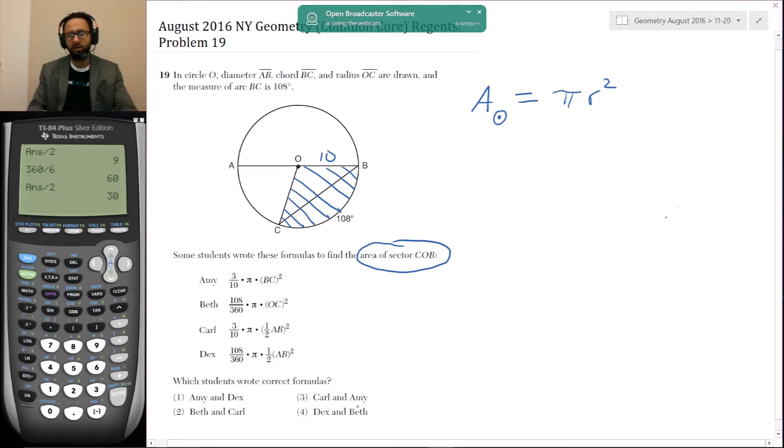Only two of these answers can be correct according to the choices. So whichever two answers happen to match about half the area of the circle and match each other is probably the correct answer, and we can stop there.